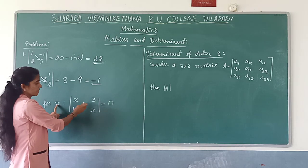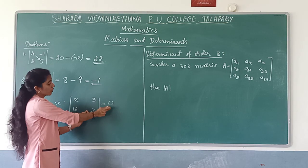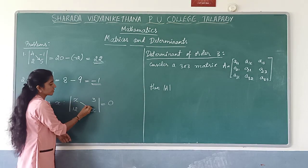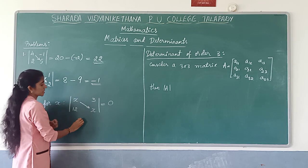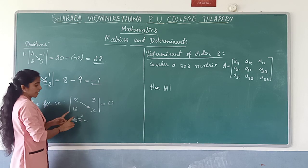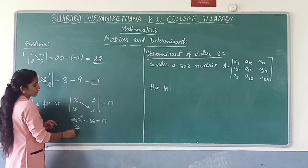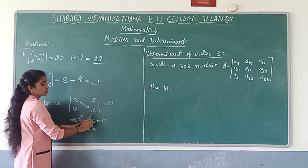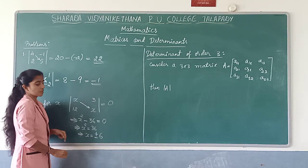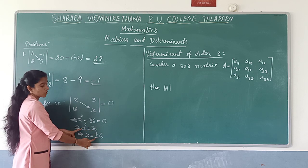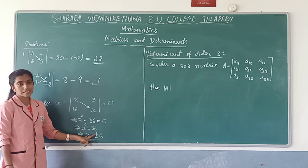Now for this problem we have to solve for x. The determinant is given to be equal to 0. First we have to find the determinant: x into x which is x squared, minus sign in between, then 12 into 3 = 36, equal to 0. So x squared equals 36, which gives x = plus or minus 6, because squaring both plus 6 and minus 6 gives 36.